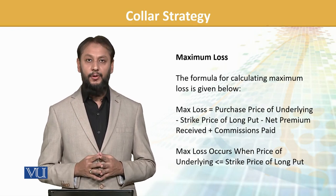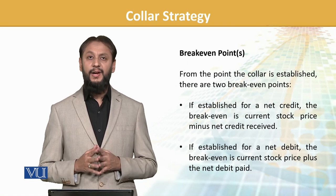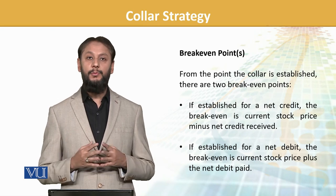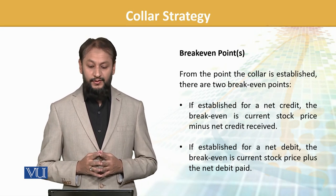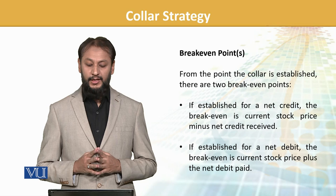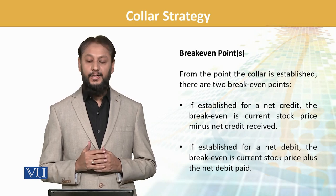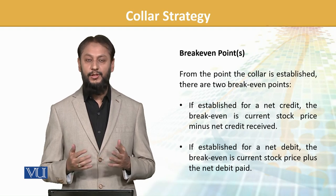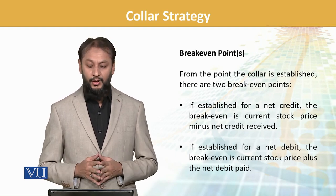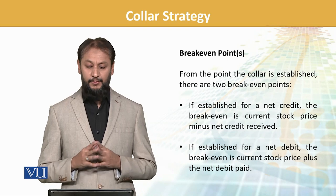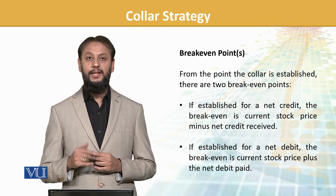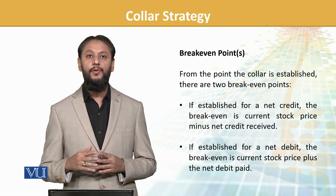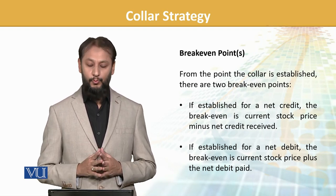Maximum loss occurs when the underlying is equal to or less than the strike price of the long put. That is why we said there are two breakeven points in this strategy. If established for a net credit, the breakeven is the current stock price minus the net credit received. If established for a net debit, the breakeven is the current stock price plus the net debit. These are the two breakeven points — above and below.